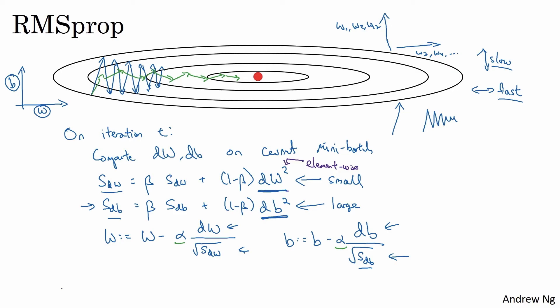So that's RMSprop. And it stands for root mean squared because, root mean squared prop, because here you're squaring the derivatives and then you take the square root here at the end.